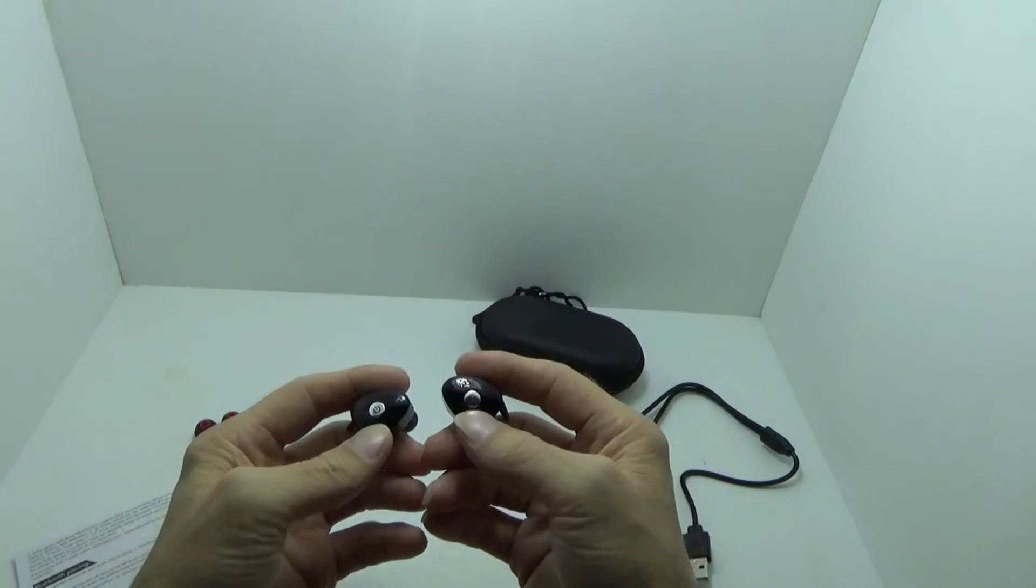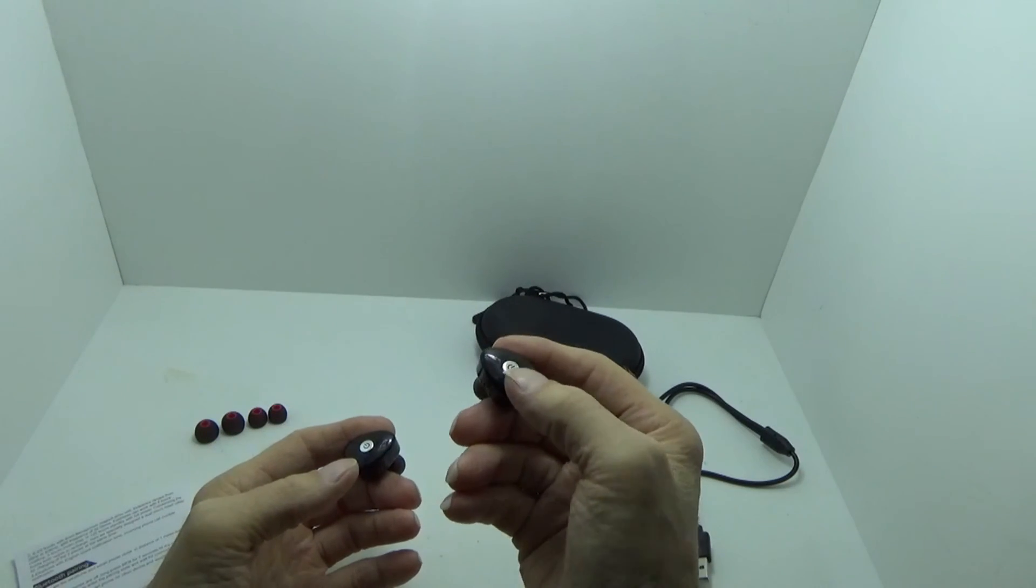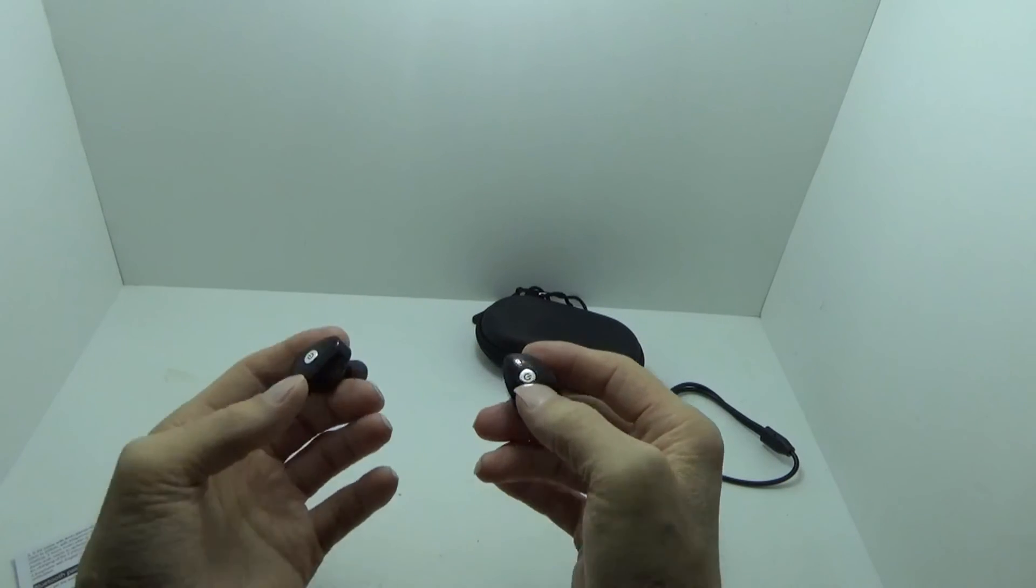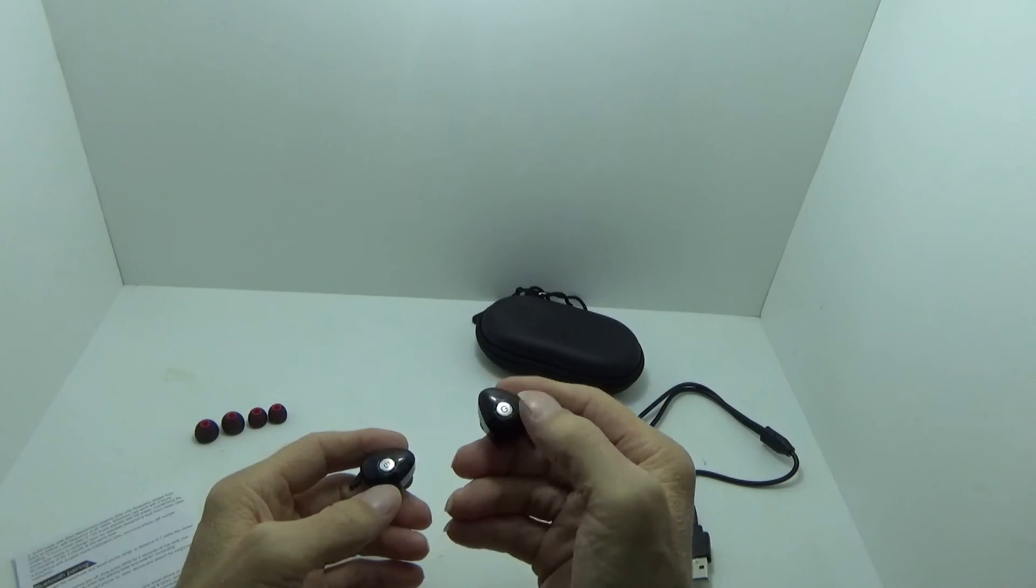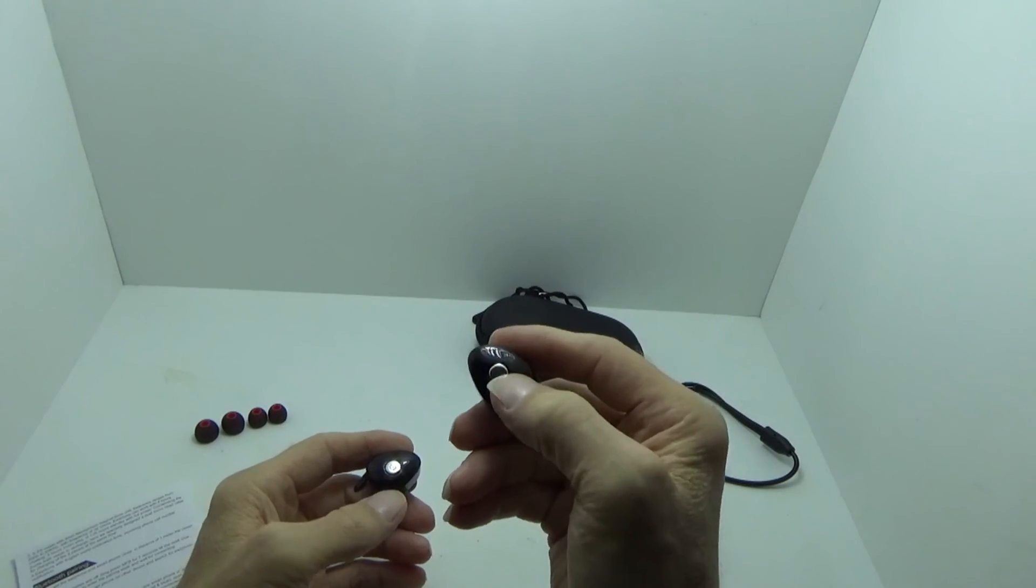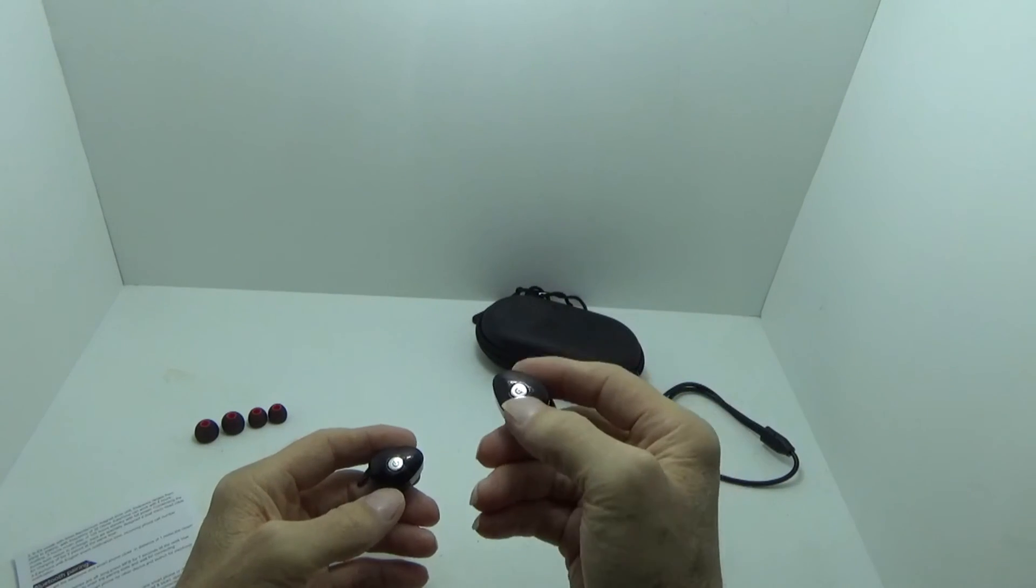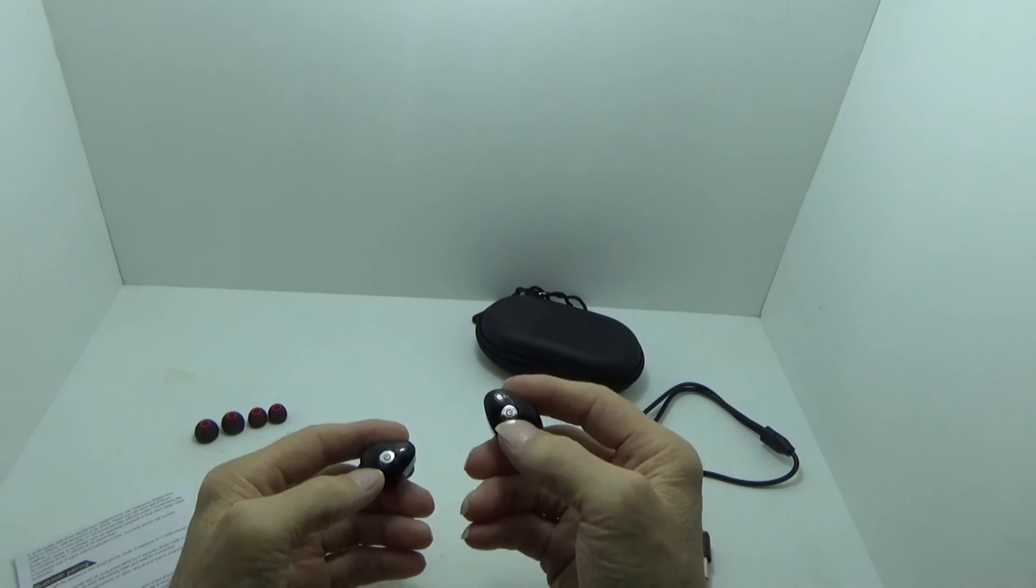They are unique though with the whole pairing aspect. You hold down the multi-function button and at about six, seven seconds, you'll get the red and blue flashing, and that's going to be your pairing mode. And you do the same to the second set, and they'll actually pair together.